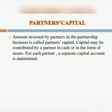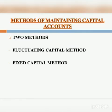In a partnership business, a partner's capital may be in the form of cash or assets invested in the firm. Capital accounts of partners may be maintained by two methods. The first one is the fluctuating capital method, and the second is the fixed capital method.